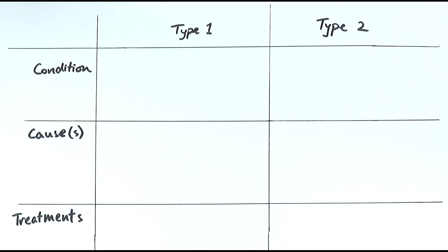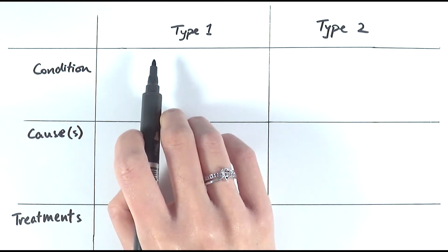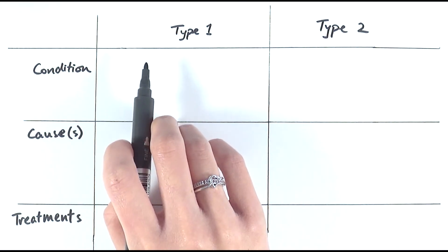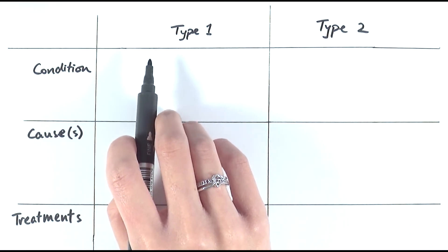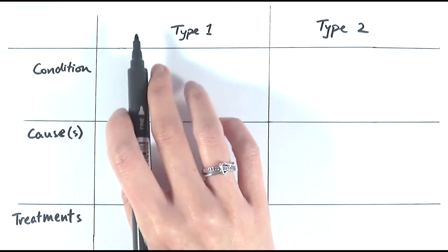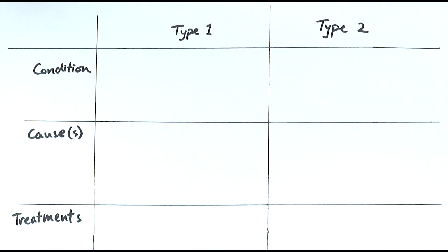Let's look at the condition of type 1 and type 2 diabetes. In type 1 diabetes, sometimes called early onset diabetes or juvenile diabetes, people will usually experience symptoms during childhood or their teenage years.